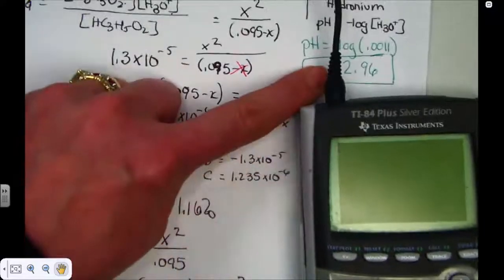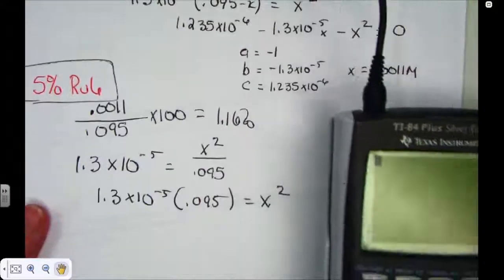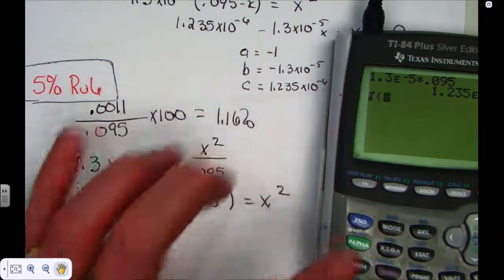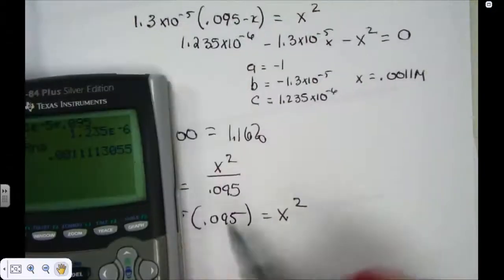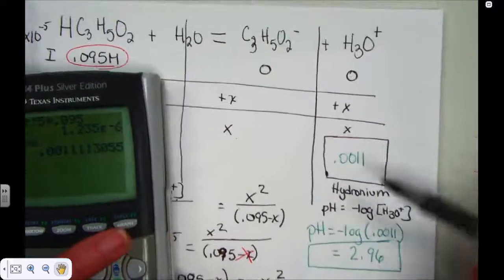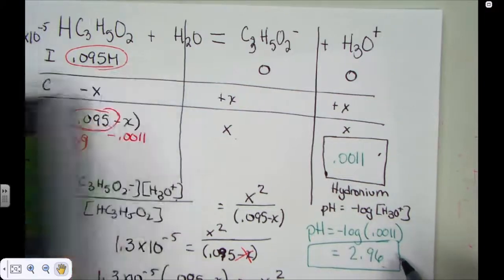Let's continue the problem. We found the pH 2.96 using the quadratic equation. Let's solve the pH with the 5% rule and compare those values. 1.3e negative 5 times 0.095 is equal to x squared. So I'll square root that answer. Look at that, x came out to be 0.0011 units. That's the same value we found using the quadratic equation. Of course, negative log of that answer gives me the same value, 2.95. That's close enough, isn't it? 2.96 is what we calculated with the quadratic equation.